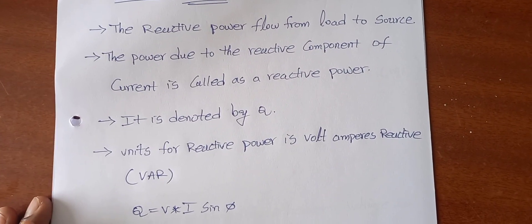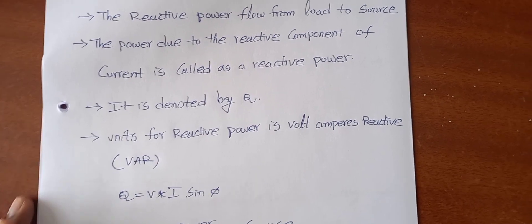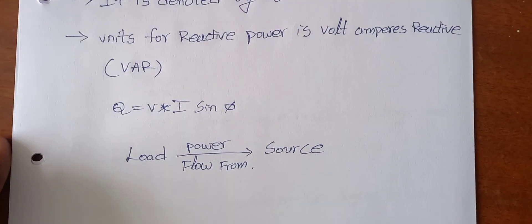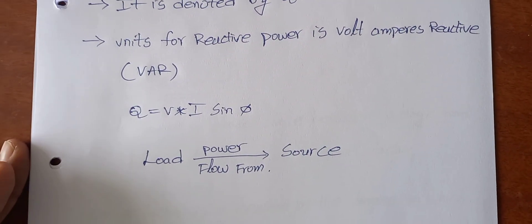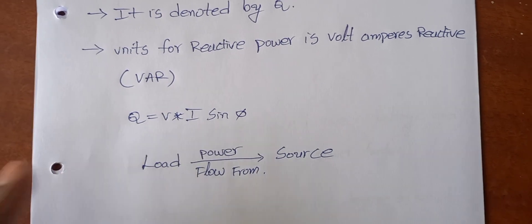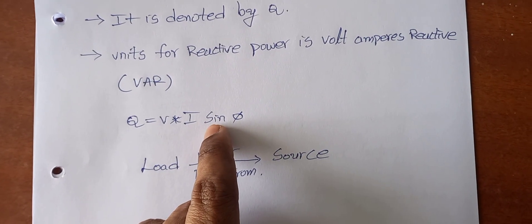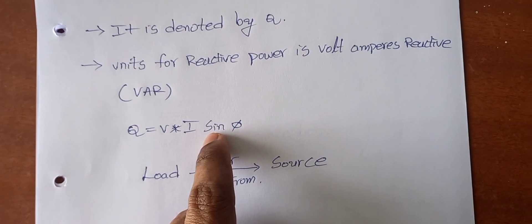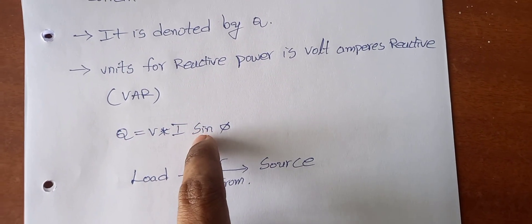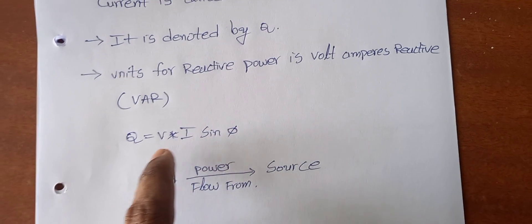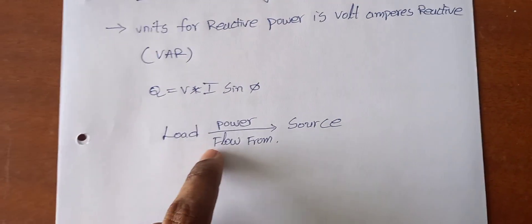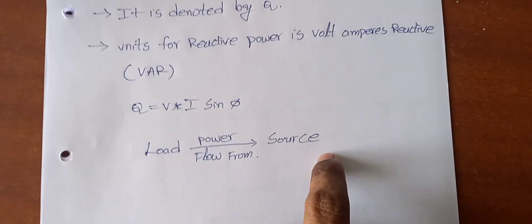Reactive power is denoted by Q. The unit of reactive power is volt ampere reactive (VAR). The formula for reactive power is Q = V × I × sin(φ). Previously in real power, we used cos(φ), whereas in reactive power we use sin(φ) in place of cos(φ). That is the only difference between the reactive power formula and the real power formula. This power flows from load to source.